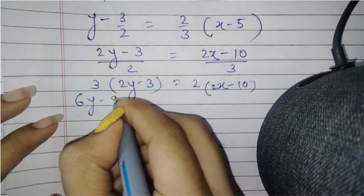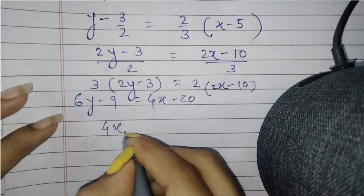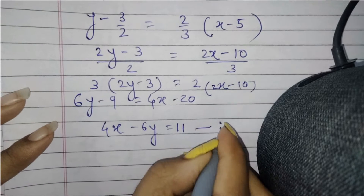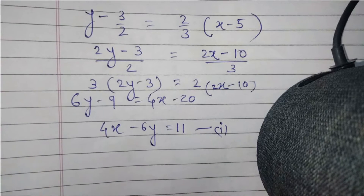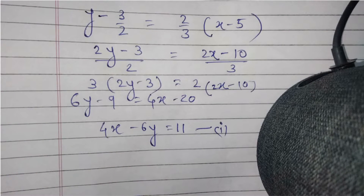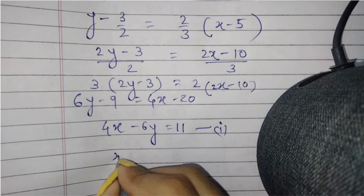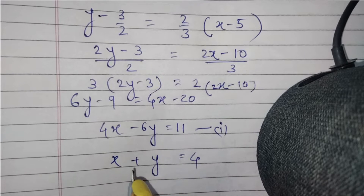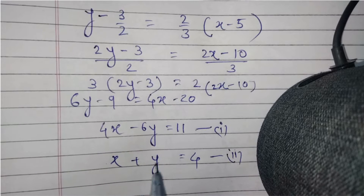This gives 6y - 9 = 4x - 20, so 4x - 6y = 11. This is the first equation. They have already given us the equation of the line on which P lies, which is x + y = 4.